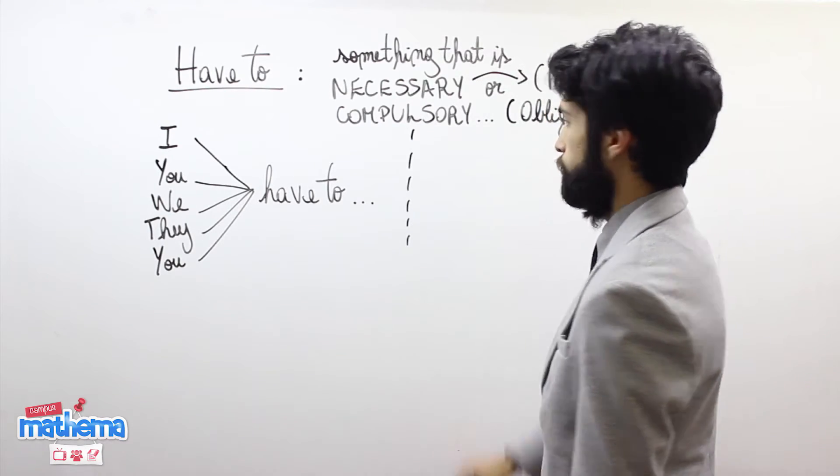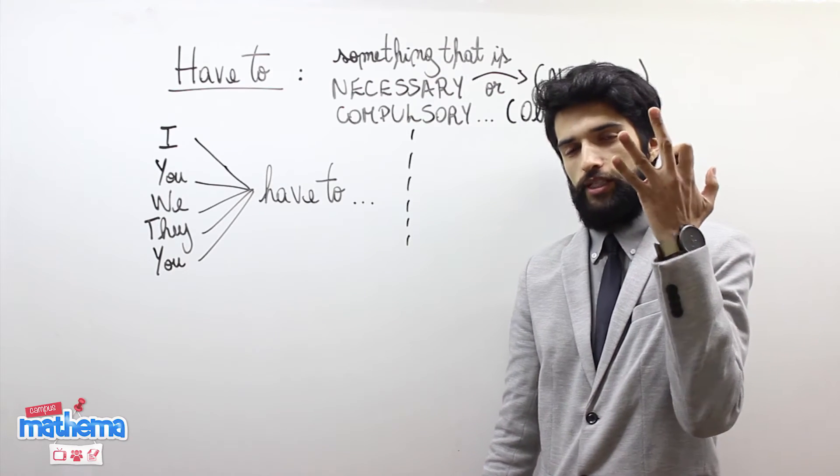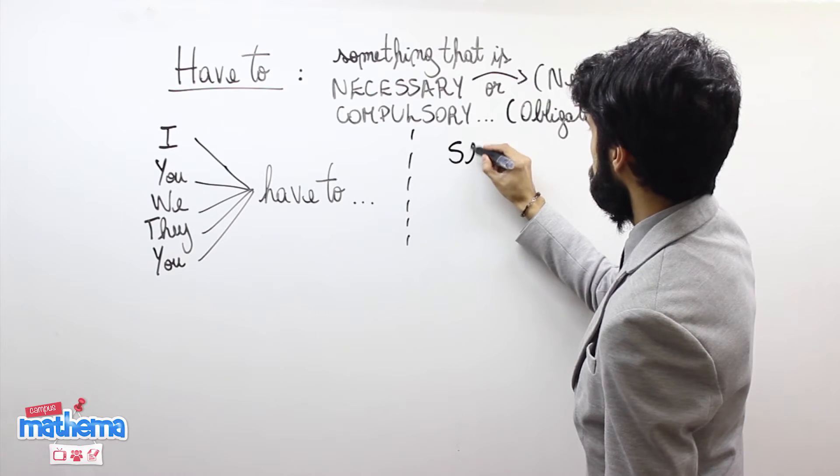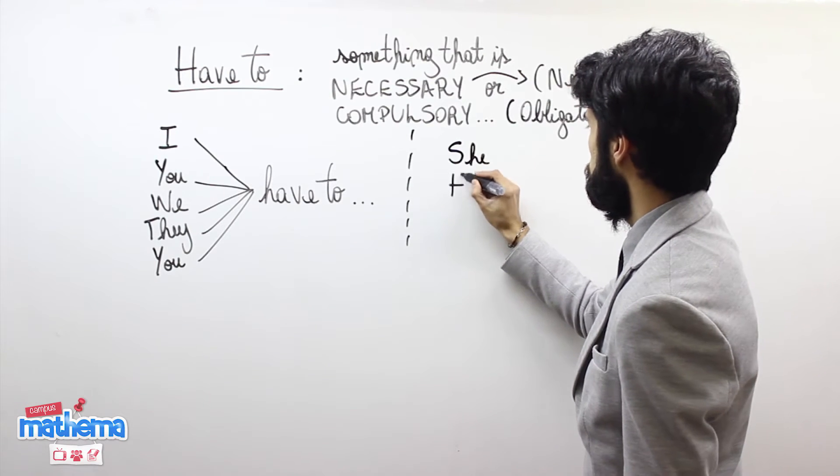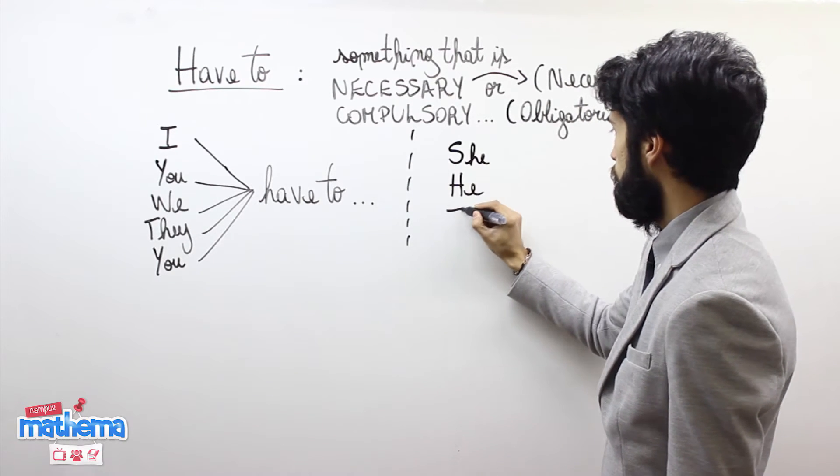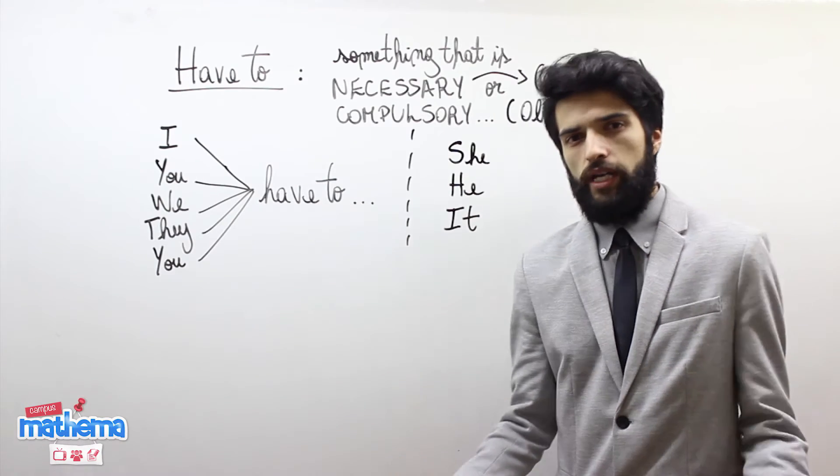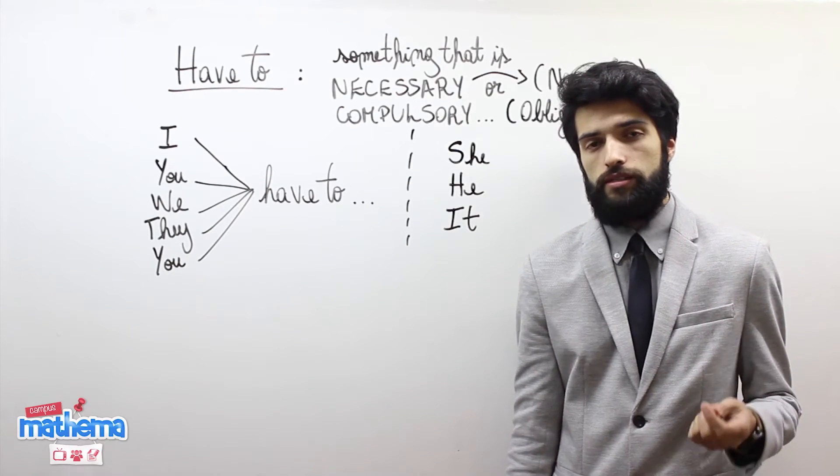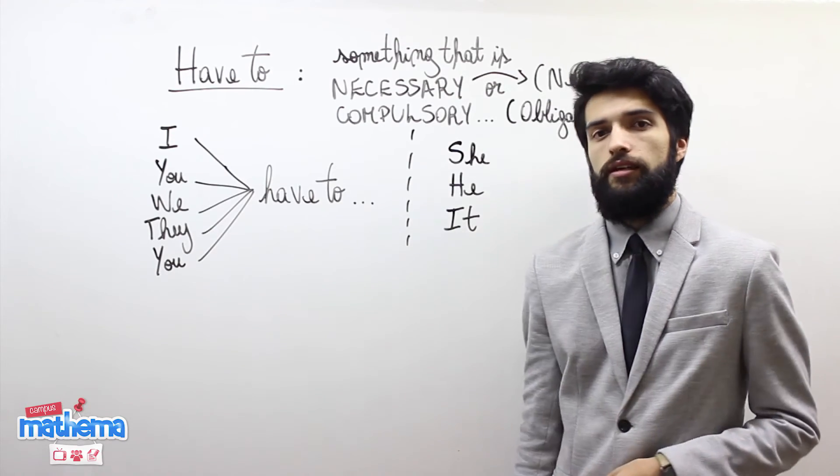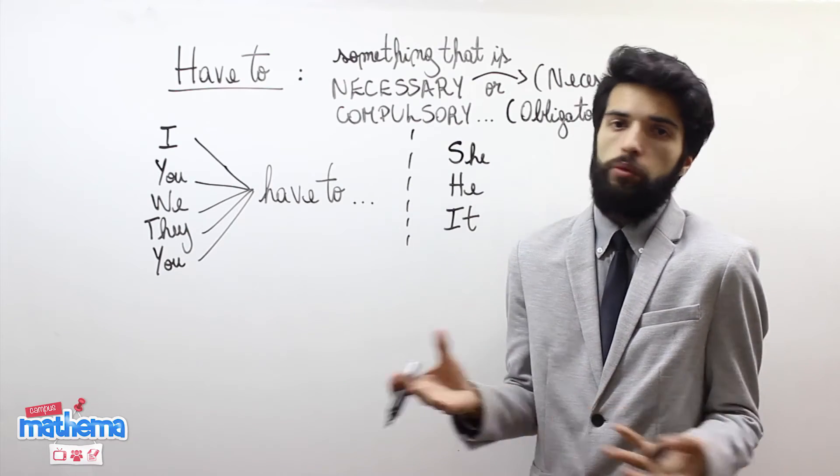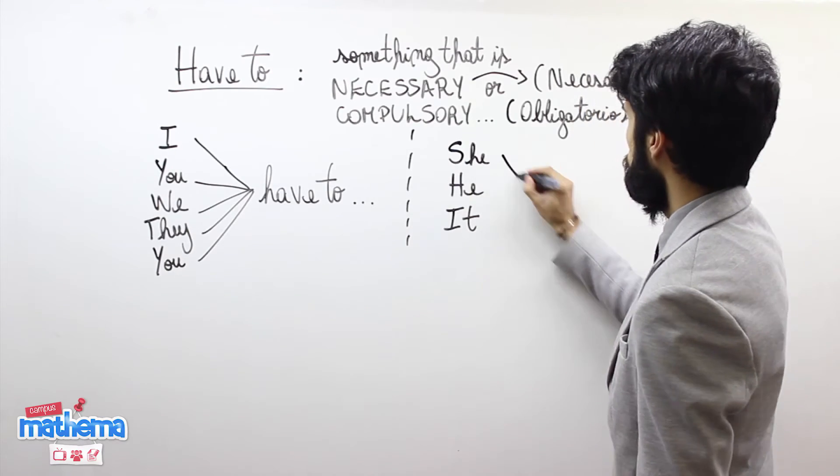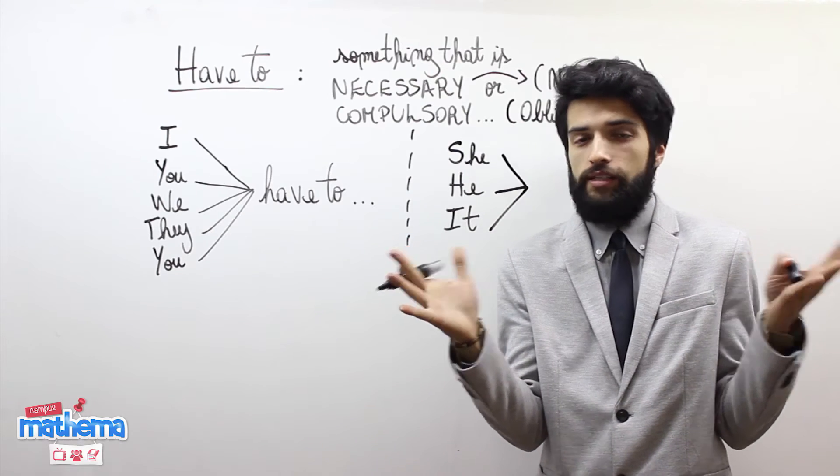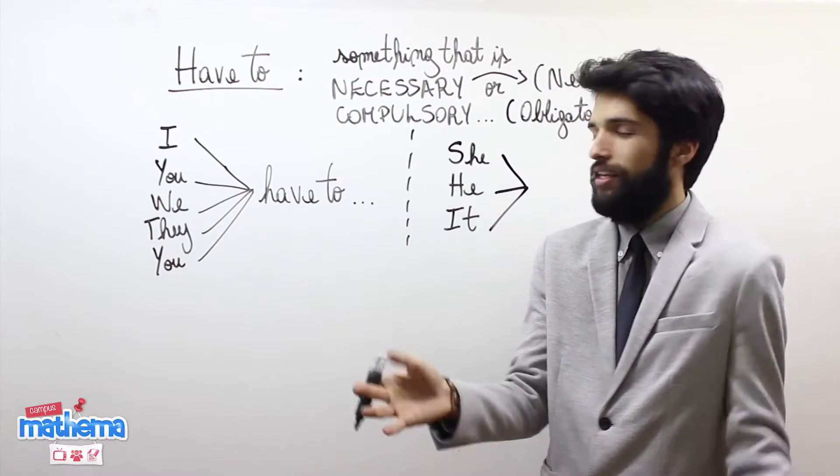Por otro lado, nos faltan tres amigos que son realmente esenciales y siempre se acordarán de ellos. She, nuestra amiga, he, and it. She in Spanish is ella. He in Spanish is él. And it in Spanish is esto o eso, un objeto.